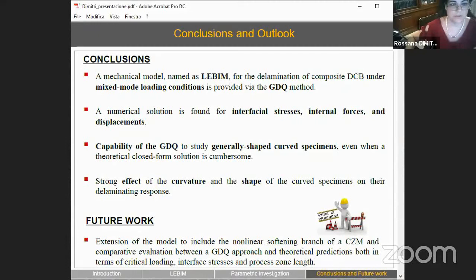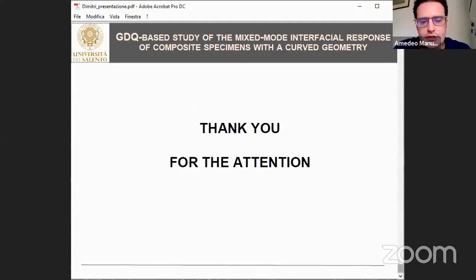We have proved the sensitivity of the delamination response for different curvature and shapes for the specimen, which could be of great interest for design applications of adhesive joints and curved members. We have also proved the efficiency of the Generalized Differential Quadrature approach to treat this kind of problems. A possible further extension of the work could include the non-linear softening branch as typical of cohesive zone modeling for fracture mechanics problems and possibly to extend to shell structures this kind of numerical method. Thank you very much for your attention.